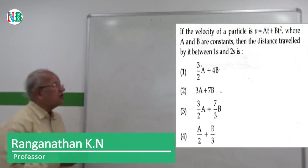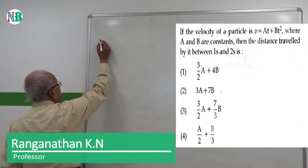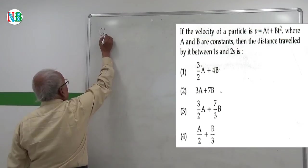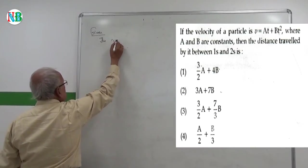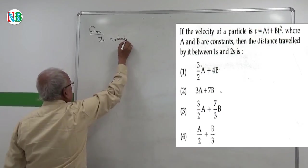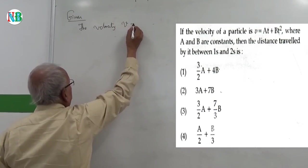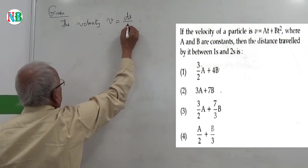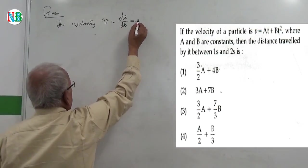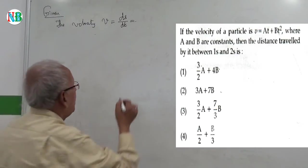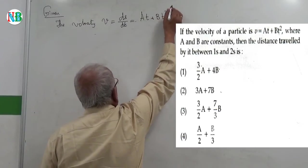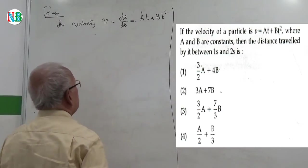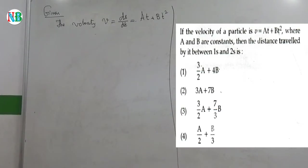So now in this problem, the velocity of the particle is given. Let me call it V and it is the rate of change in displacement, and that is given to be AT plus BT square. Of course, S is the displacement.